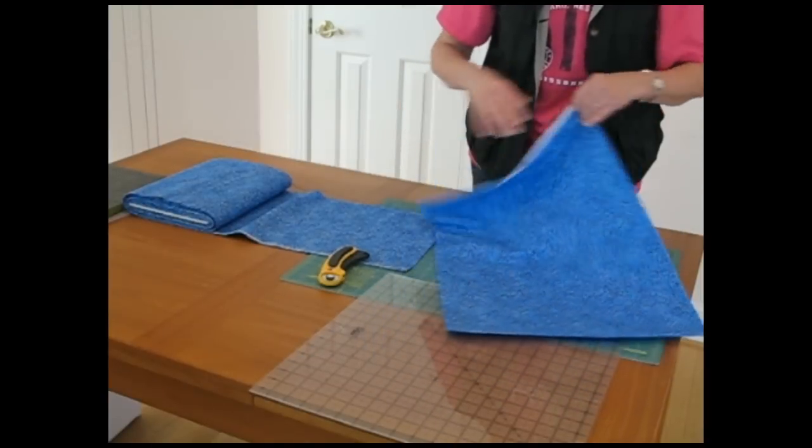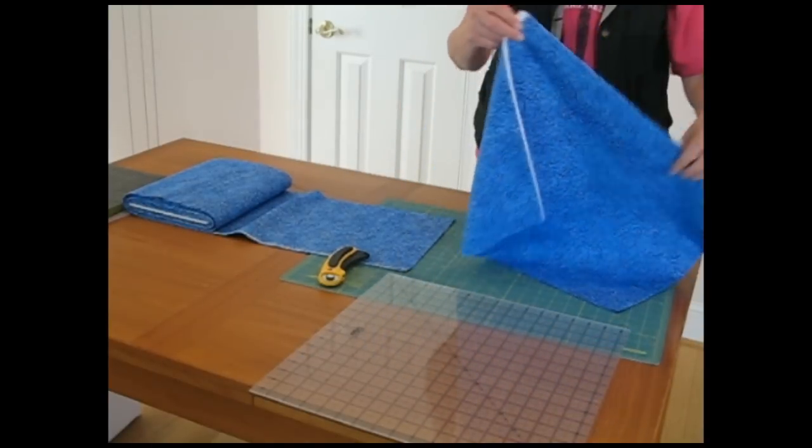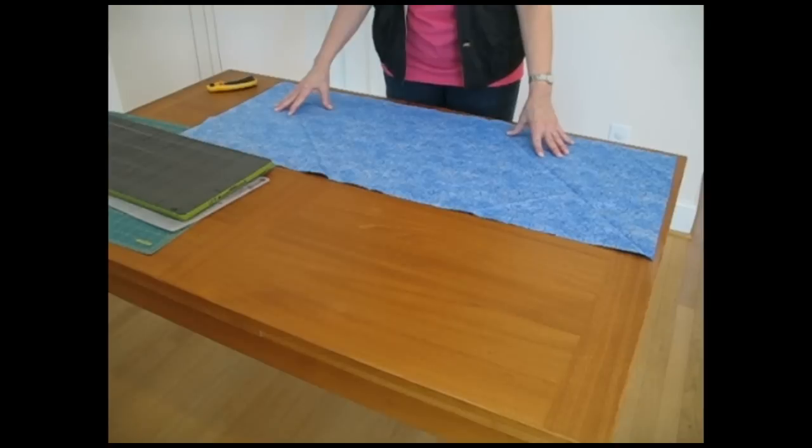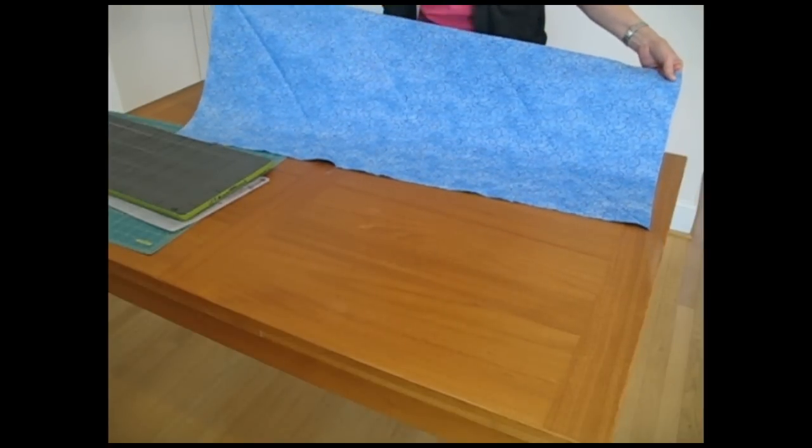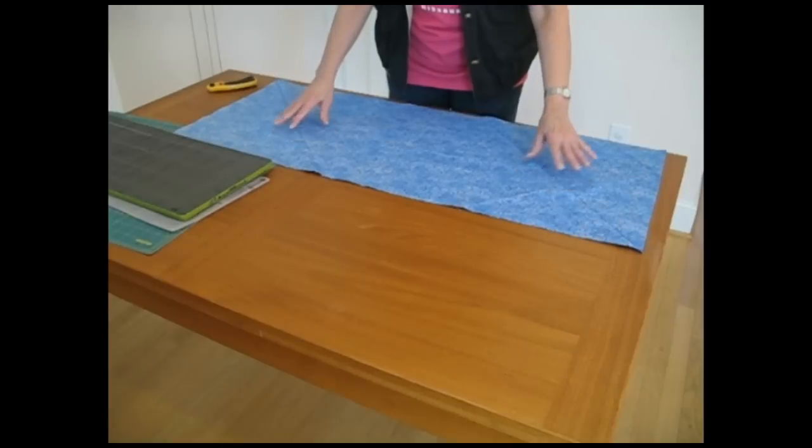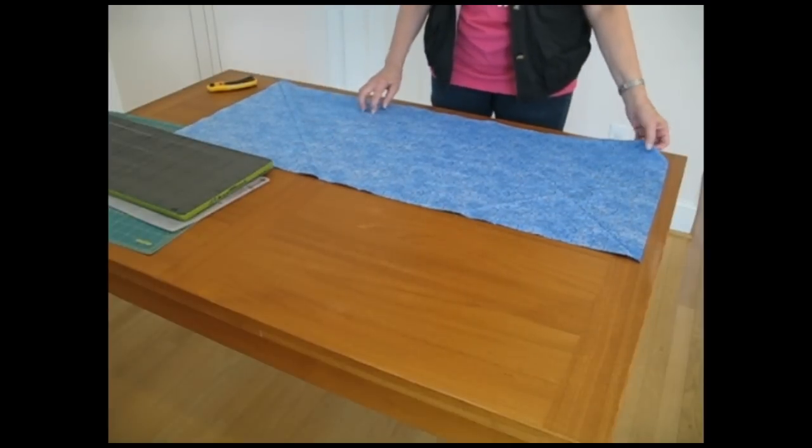The next step is that I want to remove the selvedges from my fabric. Once the long rectangle of fabric has been cut, I take it to the ironing board and press.